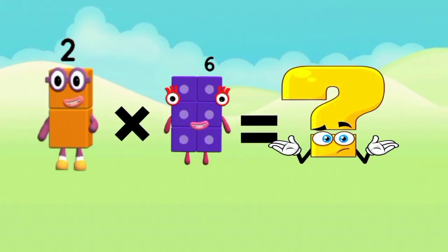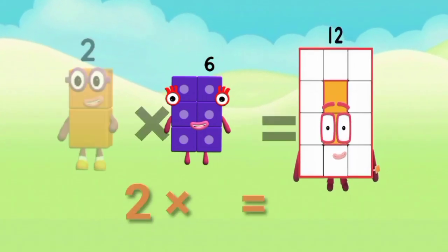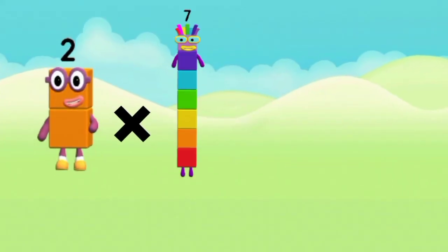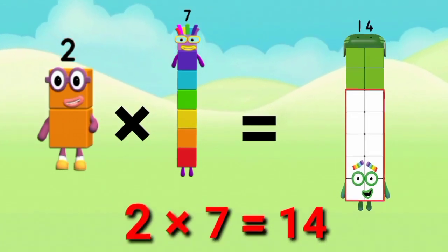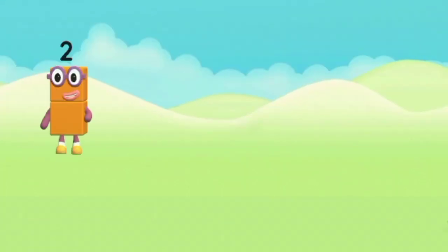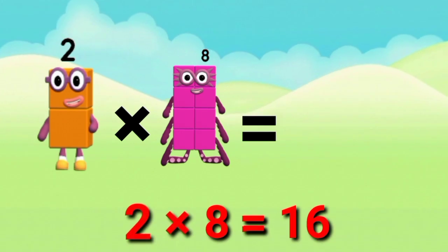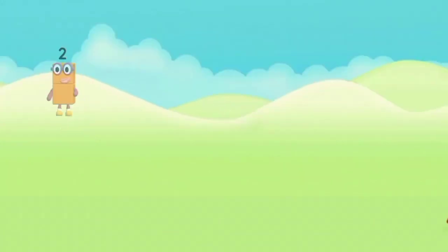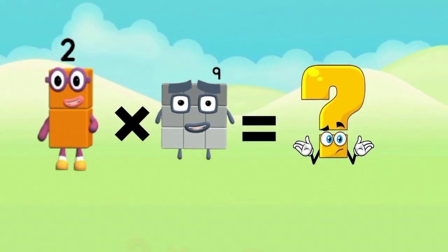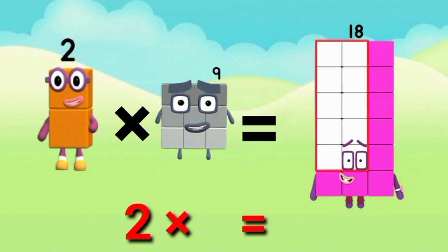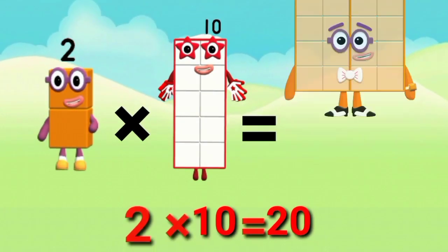Two sixes are twelve. Two sevens are fourteen. Two eights are sixteen. Two nines are eighteen. Two tens are twenty.